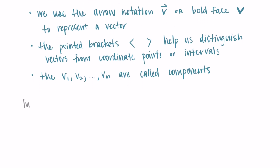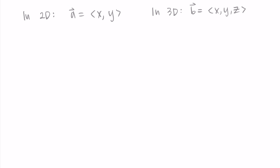Since we'll primarily be working in two and three dimensional space, here are some examples. In two dimensions, vector a has components x, y. In three dimensions, vector b is equal to x, y, z. The first component represents the x distance, the second component represents the y distance, and in three dimensions the third component — z — represents the z distance. Let me show you how to convert a symbolically written vector into an image, with a two-dimensional and a three-dimensional example: the vector 2, 5 in two dimensions and the vector 1, 3, 4 in three dimensions.